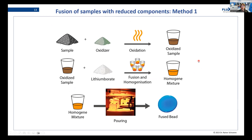How does the oxidation work? There are actually two methods. In the first method, you take the sample and an oxidizer, oxidize those two, then you have your oxidized sample. In the next step, you mix the oxidized sample with the lithium borate, fuse and homogenize it, then pour it and get the fused bead. It is basically this oxidizing step that is different from the standard process.